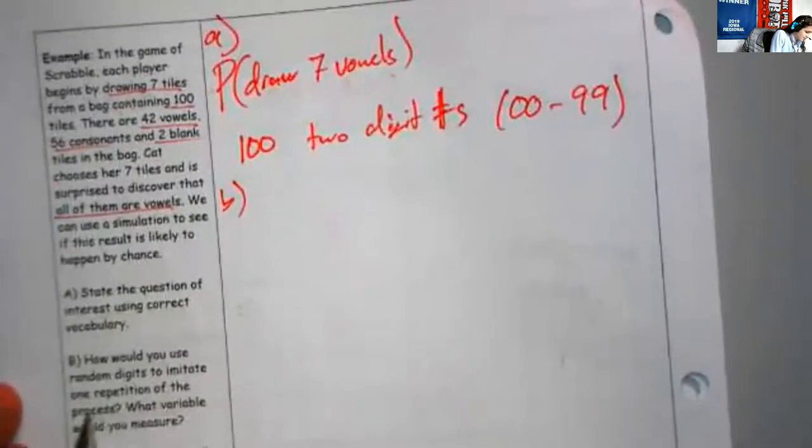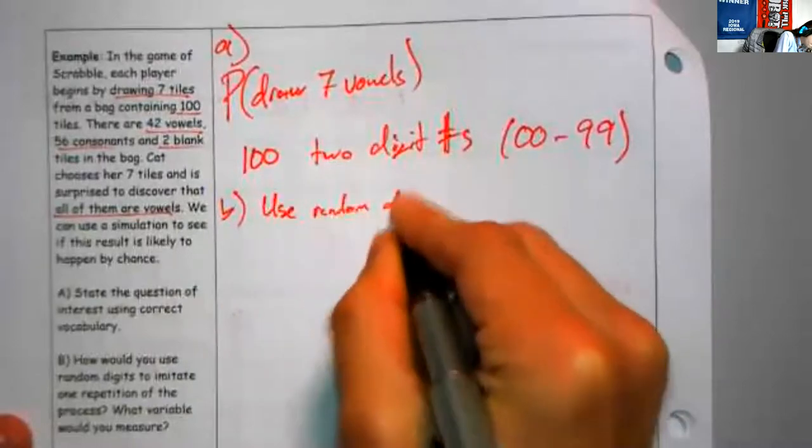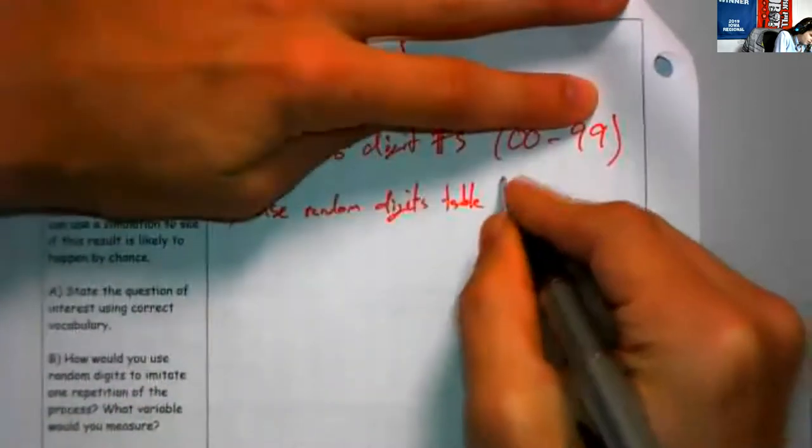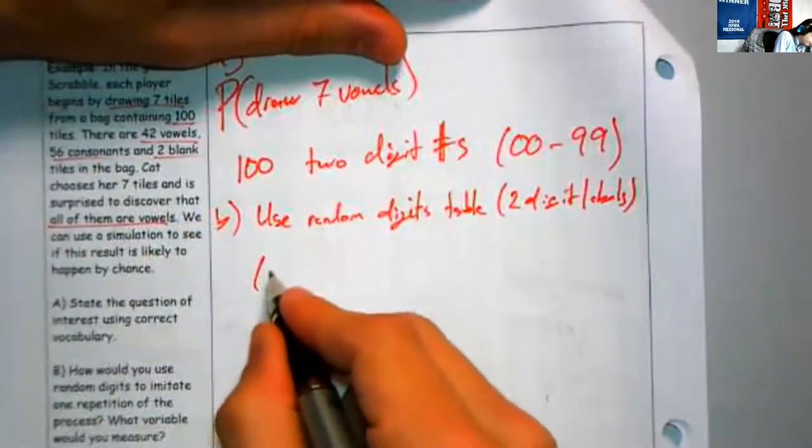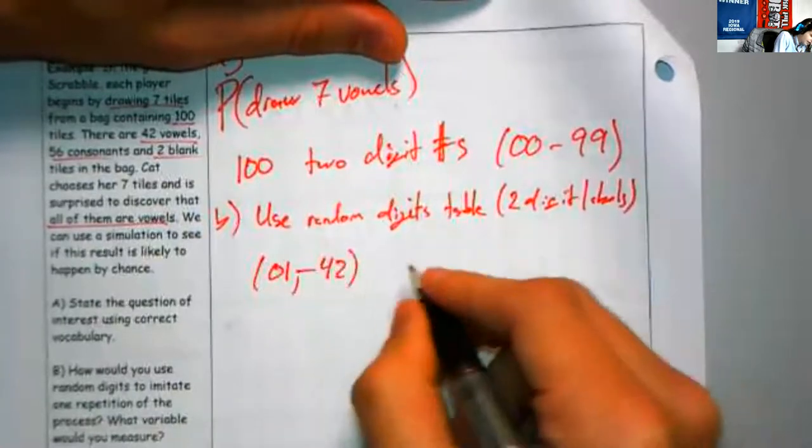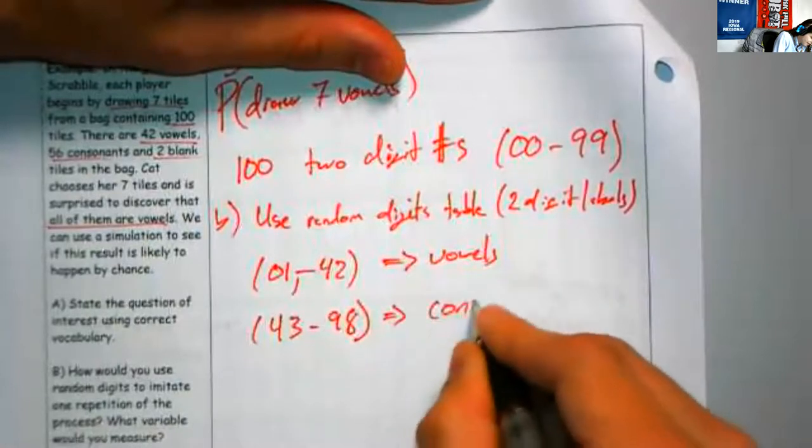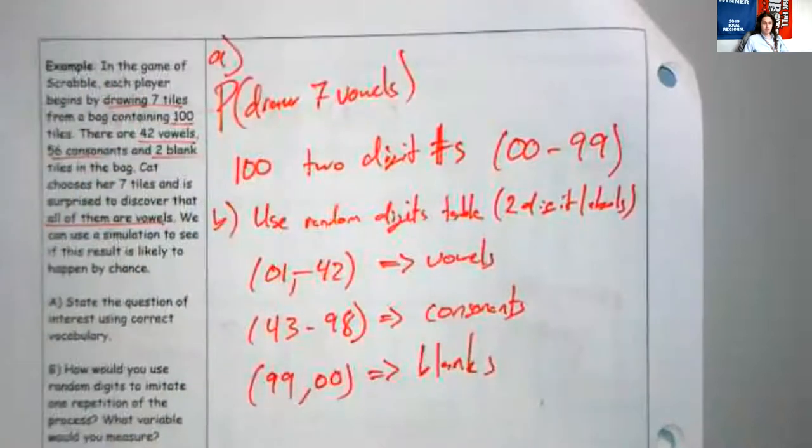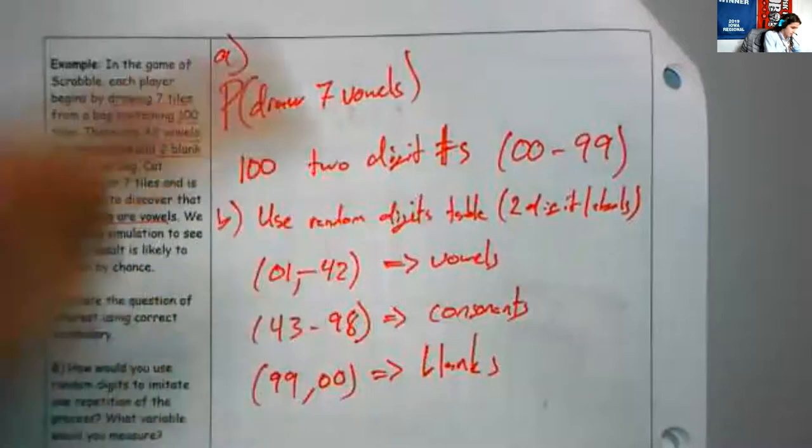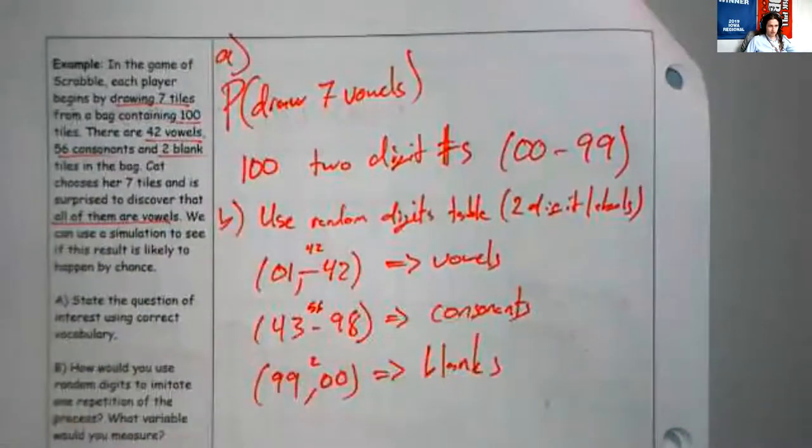How would we use random digits to imitate run repetition of the process? What variable would you measure? So we would say that we're going to use a random digits table. And we're going to use two-digit labels. And let's say, okay, we got 42 vowels. So let's say 01 through 42. Let's say those are vowels. Let's say 43 to 98. Those are consonants. And the two weirdos, 99 and double zero, we're going to call those the blanks. Does it matter how you assign them? No. As long as there are 42 here, 56 here and two here, you're good to go. Because the outcomes match up with the probabilities and reality. The outcomes in the simulation match up with the probabilities, the outcomes, the reality.